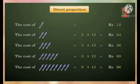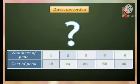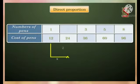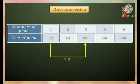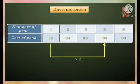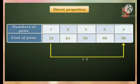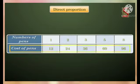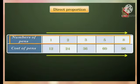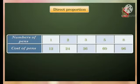Let us put this information in a table. To find cost of two pens, we multiply 2 by 12 to get Rs. 24. To find cost of three pens, we multiply 3 by 12 to get Rs. 36. To find cost of five pens, 5×12 = Rs. 60. To find cost of eight pens, 8×12 = Rs. 96. We see that the cost of pens increases as the number of pens increases, and decreases if the number of pens decreases. From the table, we also see that the ratio of number of pens to the cost of pens remains constant.